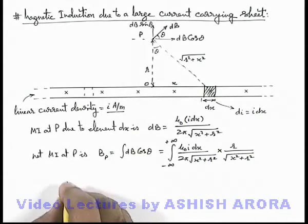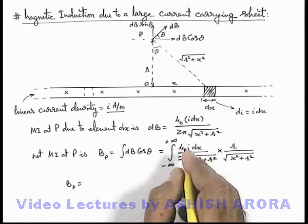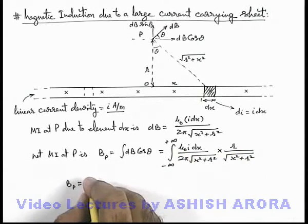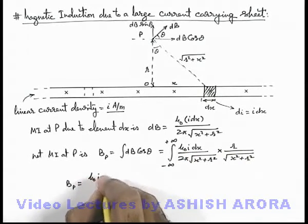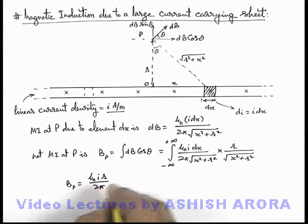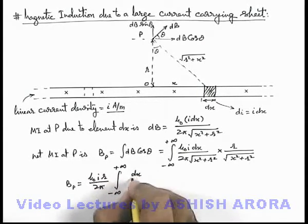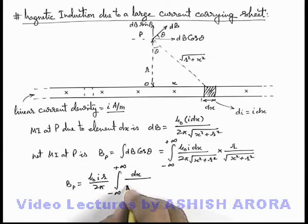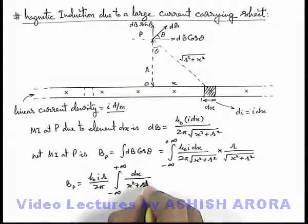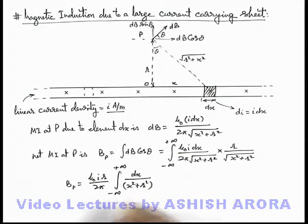Now in this situation, this Bp integral will become, here we can take these constants out, so this will be mu not i r by 2 pi, integration from minus infinity to plus infinity, this dx upon x square plus r square. And directly we can integrate this expression. And this will be mu not i r by 2 pi, this integral will be 1 by r tan inverse of x by r, which is having its limit from minus infinity to plus infinity. Here this r gets cancelled out.